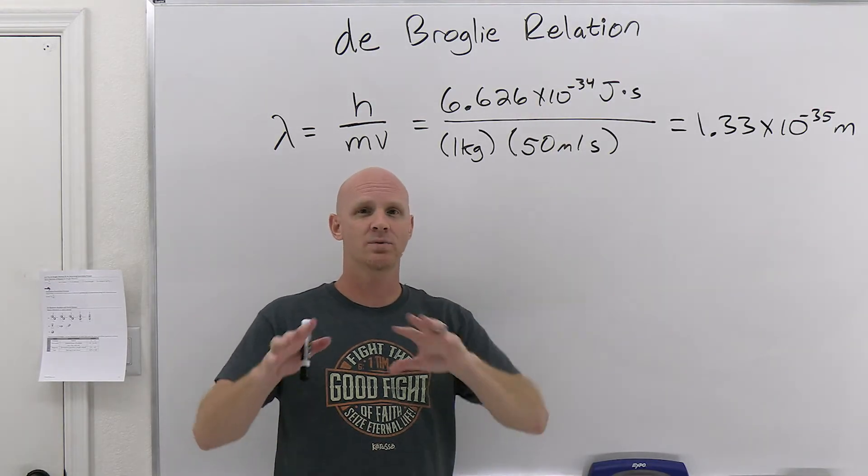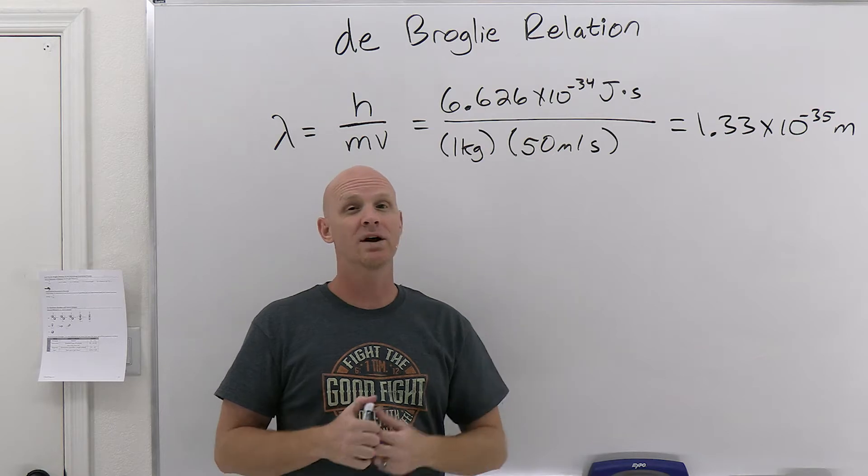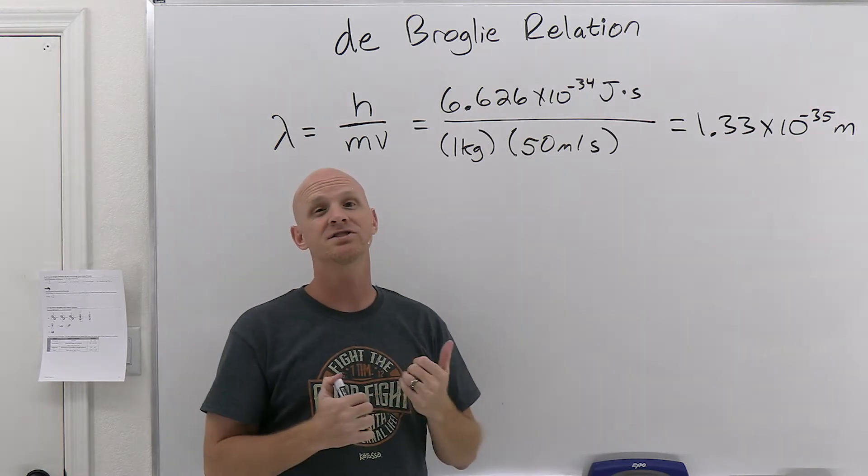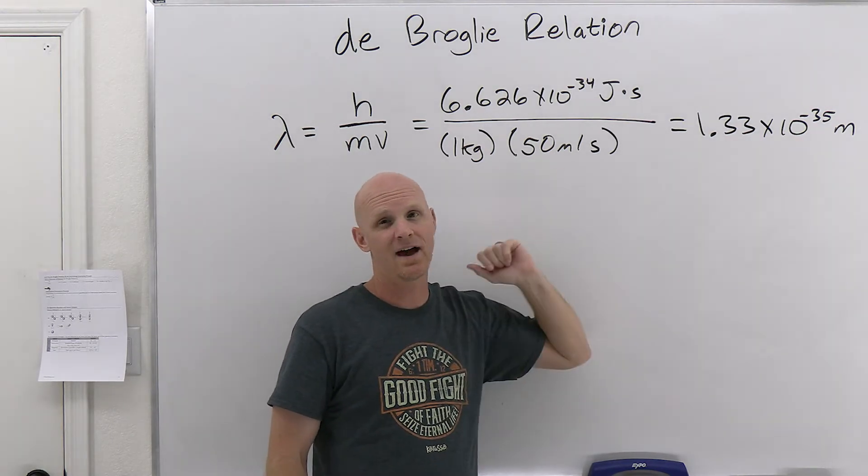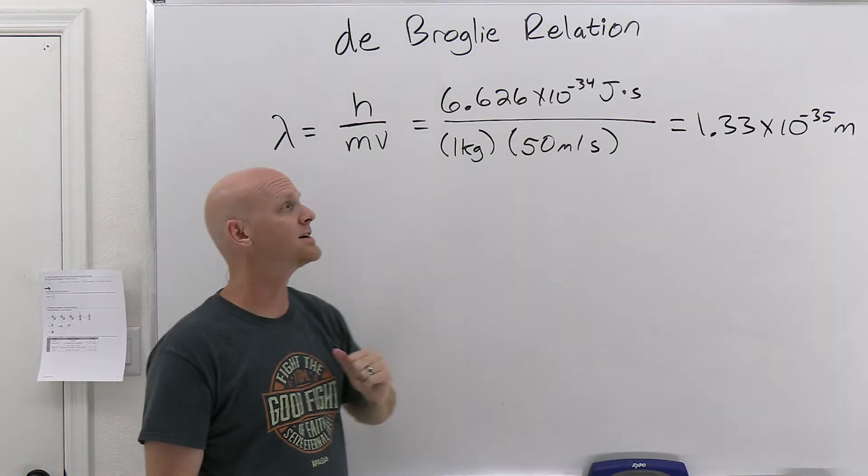But we don't even have a device that could measure this. And that's why for, you know, large objects that we deal with in macro world, do they have a wavelength? In all likelihood, they do. They're just so small. They can't be detected. But for something like an electron,